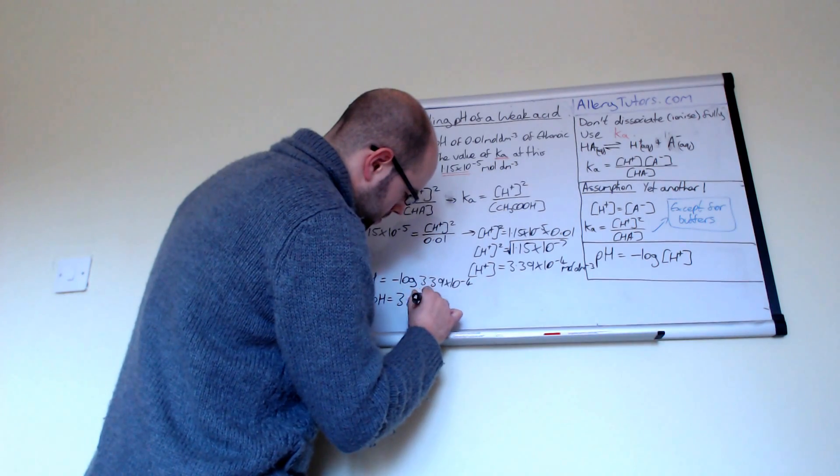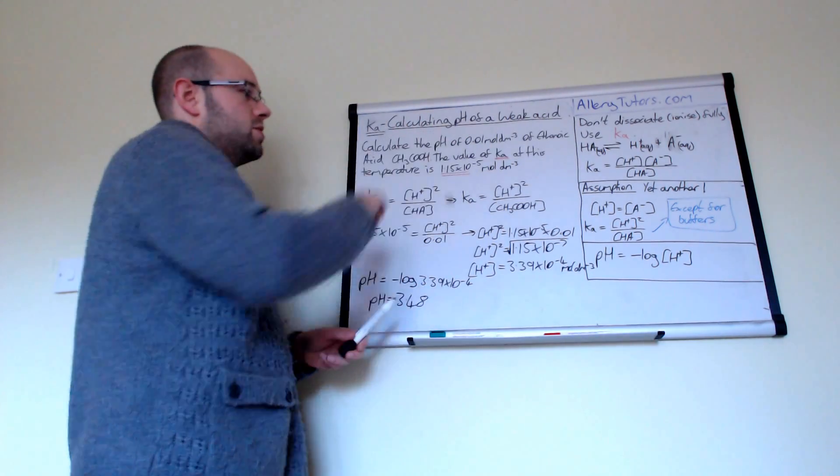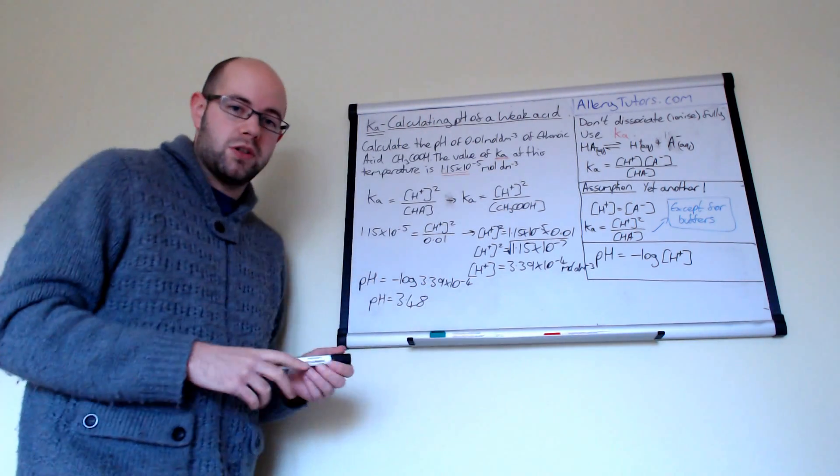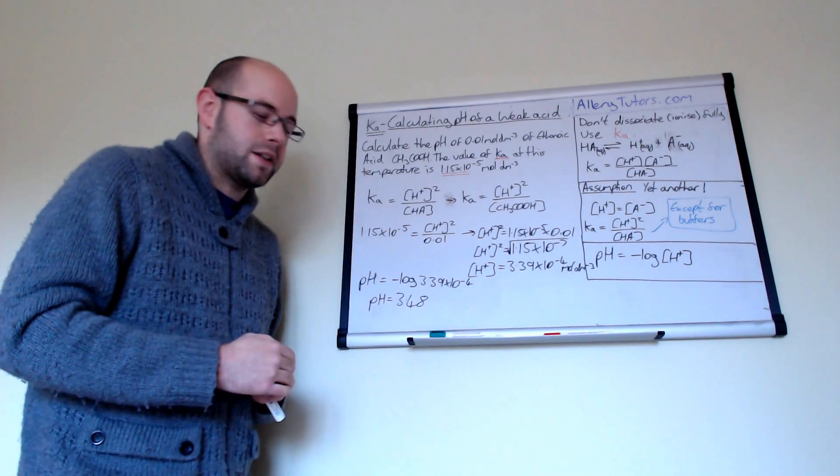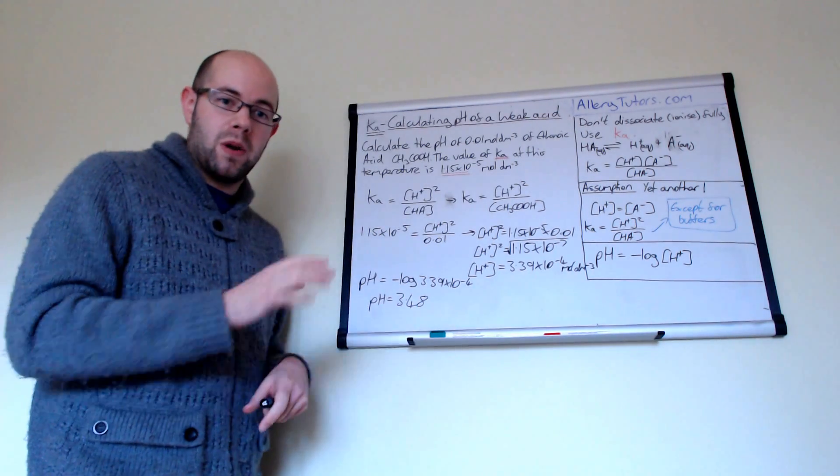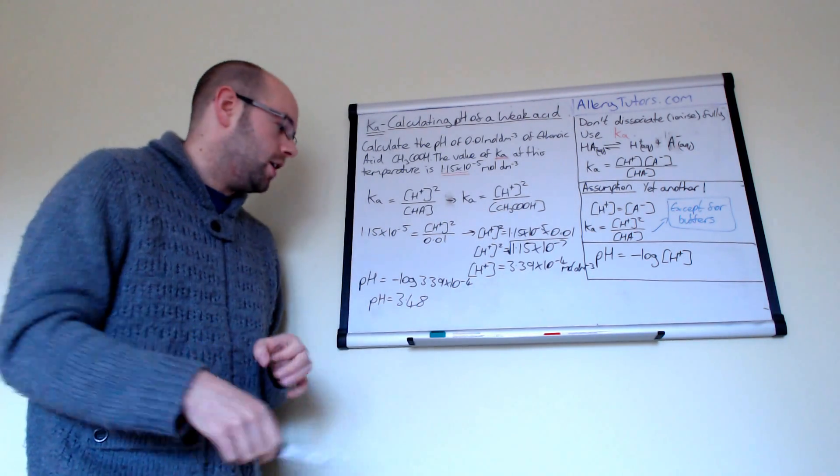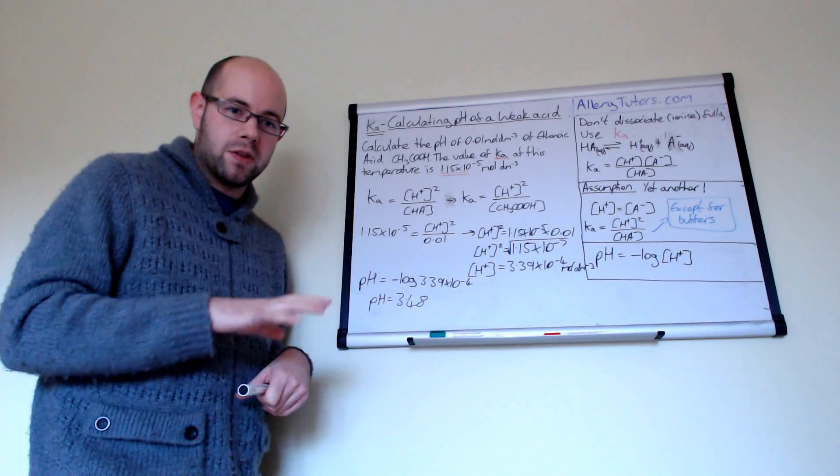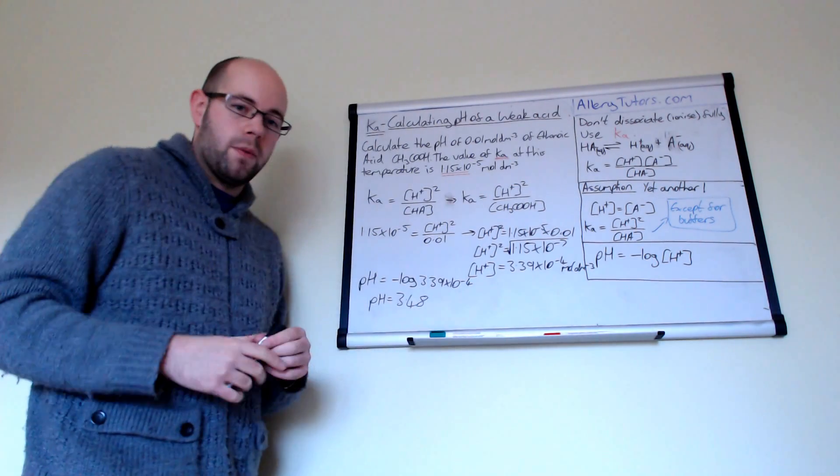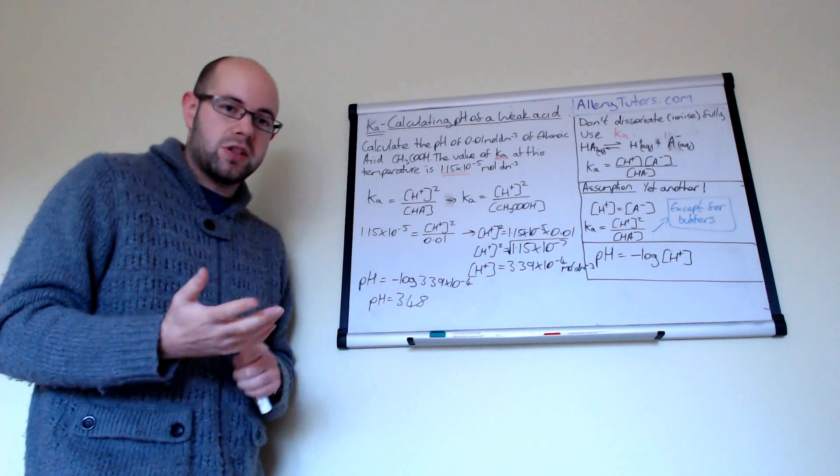And that is what we would expect. And because this is a weak acid, we wouldn't expect a pH that much lower than that. Normally, strong acids are about less than 1 or about the 1 area. And weak acids would be around about the 2 to 3 area for our weak acid. So 3.48 does seem a sensible answer.